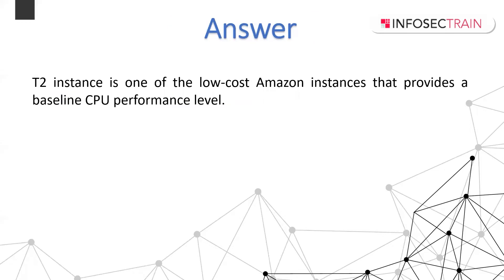A T2 instance is a low-cost Amazon instance that provides a baseline CPU performance — also called a burstable performance instance — with the ability to burst above the baseline. T2 instances work well with Amazon EBS General Purpose SSD volumes and are available in the AWS Free Tier. For demos or personal use, T2 or T3 instances are recommended. They are free for 750 hours of Linux and Windows usage each month for up to one year for new AWS customers.